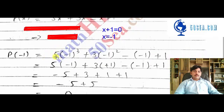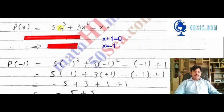Here we substitute negative 1. So 5x cubed, this is negative 1. 3x squared, this is negative 1. Minus x value negative 1 plus 1.